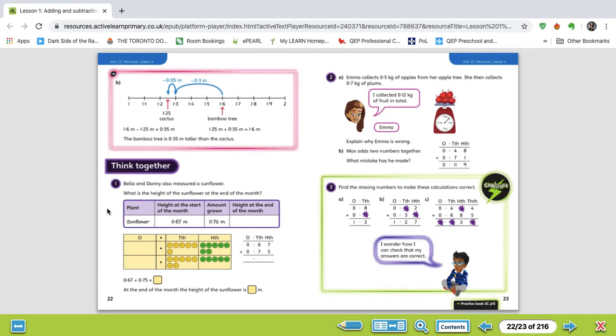Then we've got question two. So she's collecting fruit, but she's made a calculation error. So it's your job to figure out what that error was. Hint, I've already mentioned something like this before.